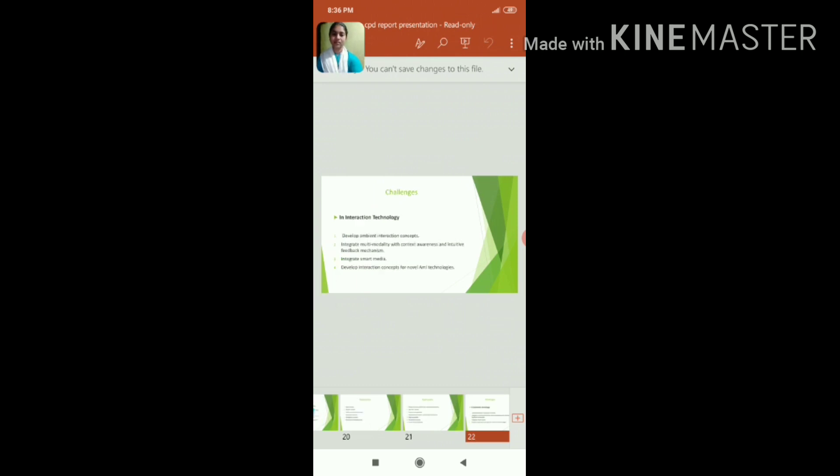Let's see the challenges to ambient intelligence. The main challenge is in interaction technology. The first challenge is to develop ambient interaction concepts, integrate multimodality with context awareness and intuitive feedback mechanisms. Also integrate smart media and develop interaction concepts for novel ambient intelligence technologies.